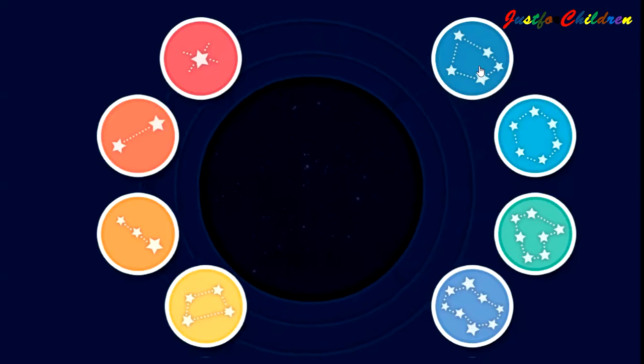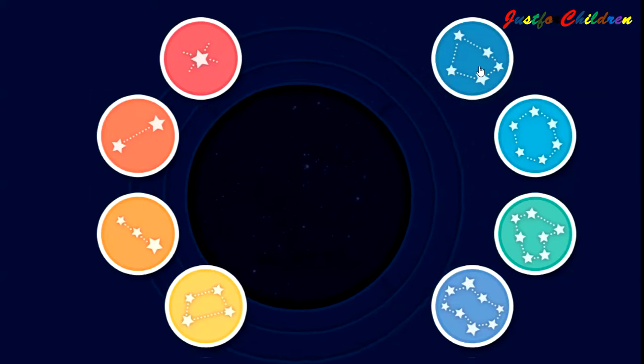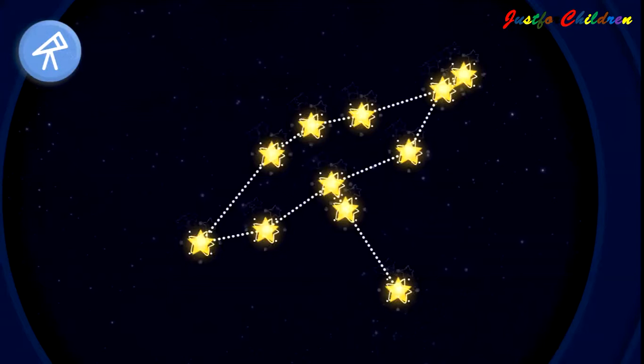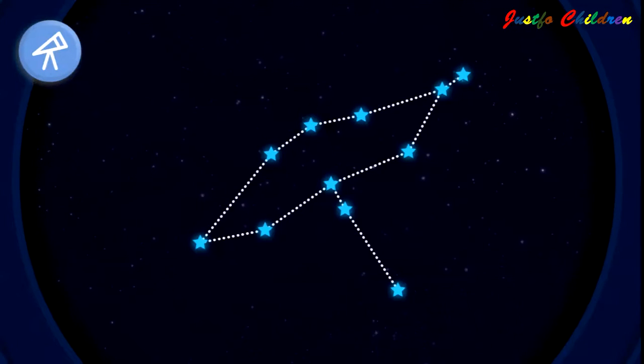Go on. Choose a constellation. Connect the lines between the blue stars to make a new shape. Those pretty pictures are called constellations. Go ahead. Get started.